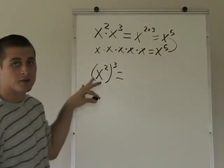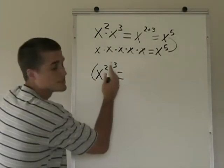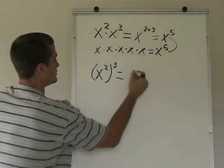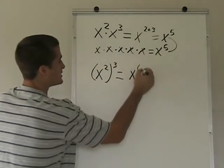When you're taking an exponent to a power, the rule is that you multiply the powers together. So this right here is going to give you x to the 2 times 3, or x to the sixth.